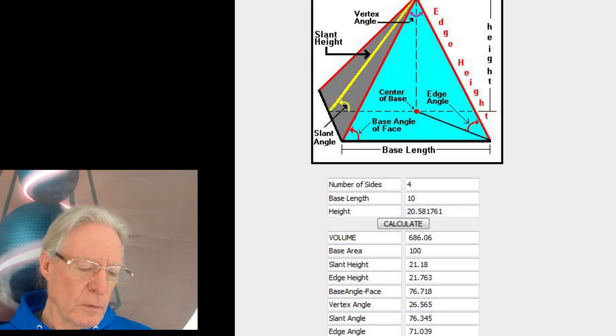And in that case, we have the edge height, which is 21.763. And that is in distinction to the slant height, which is the height in the middle of the pyramid, of 21.18. Again, slightly longer than that of the slant height. And then we also have the edge angle of 71.039, which is quite a bit different than the slant angle of 76.345 degrees. That's calculated when you do it in two dimensions in the middle of the pyramid.